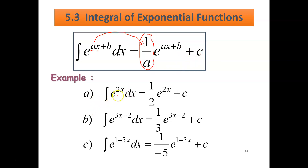Example a: integrate e^(2x) dx. You have 2 here as the constant, and a is also the constant. Since it is the exponent of 2x, it will become 1 over 2. So you get (1/2) e^(2x) plus c. Example b: integrate e^(3x-2) dx. The constant at the front of x is 3, so it becomes 1 over 3, and the rest you write back: e^(3x-2) plus c.